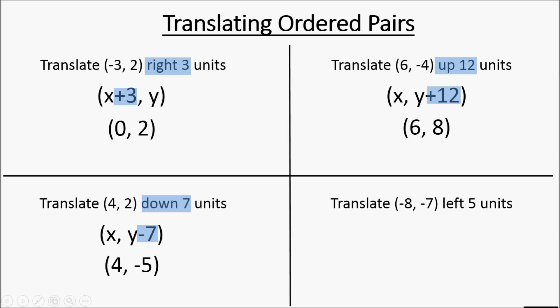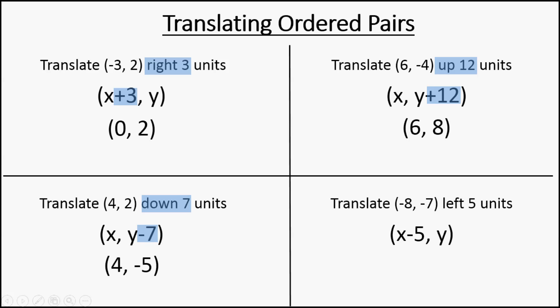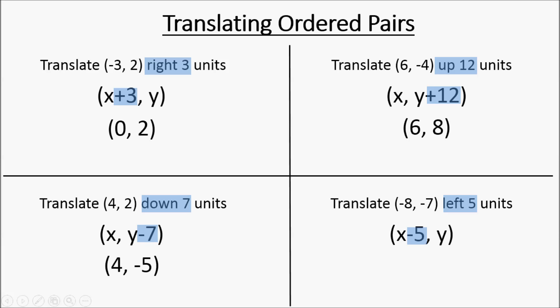Finally, we're going to do the bottom right problem. Negative eight, negative seven is going to be moved left five units. Moving something left is going to be a change in x, and left is a negative direction. So we're taking five away from the x-value. The y-value stays exactly the same. You put in negative eight for x — negative eight minus five is going to give you negative thirteen. So negative thirteen, negative seven is your location.